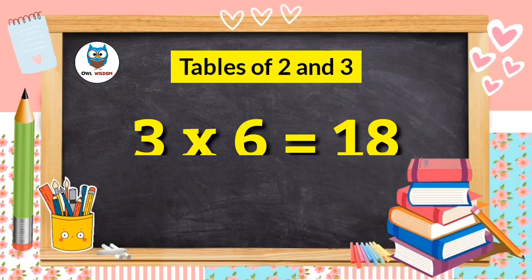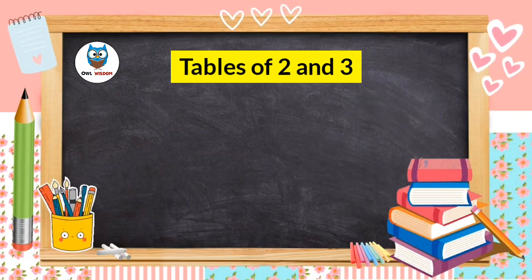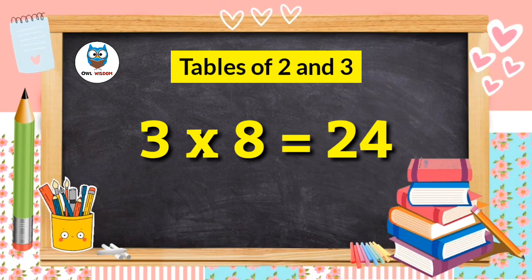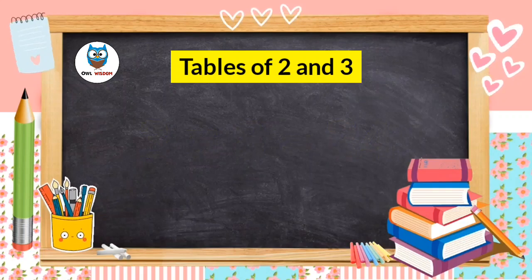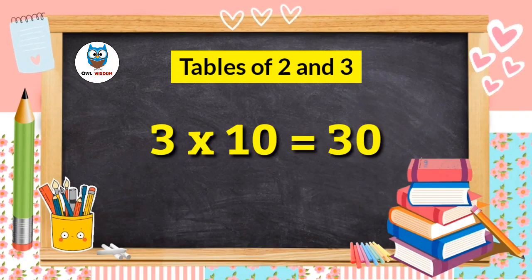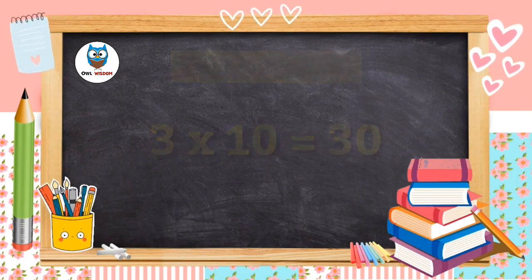3 6s are 18. 3 7s are 21. 3 8s are 24. 3 9s are 27. 3 10s are 30.